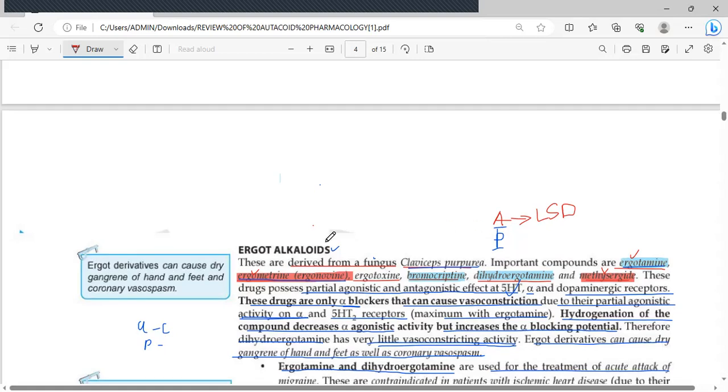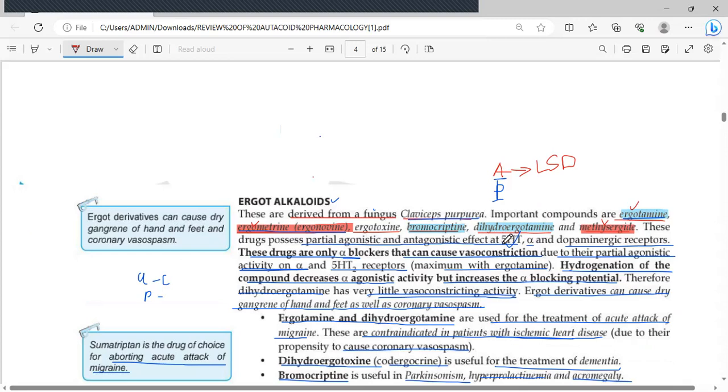These ergot alkaloids possess partial agonistic and antagonistic effects at serotonin, alpha, and dopaminergic receptors. Please remember that they have agonistic, partial agonistic, and antagonistic activities at alpha-adrenergic receptors, serotonin receptors, and they are also agonists at CNS dopaminergic receptors. These drugs are the only alpha-blockers that cause vasoconstriction. This is paradoxical. You expect an alpha-1-blocker to cause vasodilation, but these cause vasoconstriction. Why? Because of their partial agonistic activity on the alpha and serotonin, to be specific, 5-HT2 receptors.